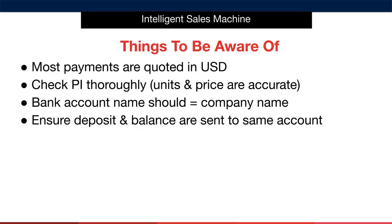There are some key things to be aware of when making international payments. First, most payments are quoted in US dollars — if quoted in any other currency, see if you can be quoted in US dollars instead. Next, check your PI or purchase invoice thoroughly, ensuring that units and prices are accurate and match what was quoted to you. The PI will contain all required details including the BIC or SWIFT reference. The bank account name should be the same as the company name — if not, investigate with your supplier. Finally, ensure the deposit and balance are sent to the same supplier bank account, and if this changes, investigate why and if required call the supplier via Alibaba or their original communication.